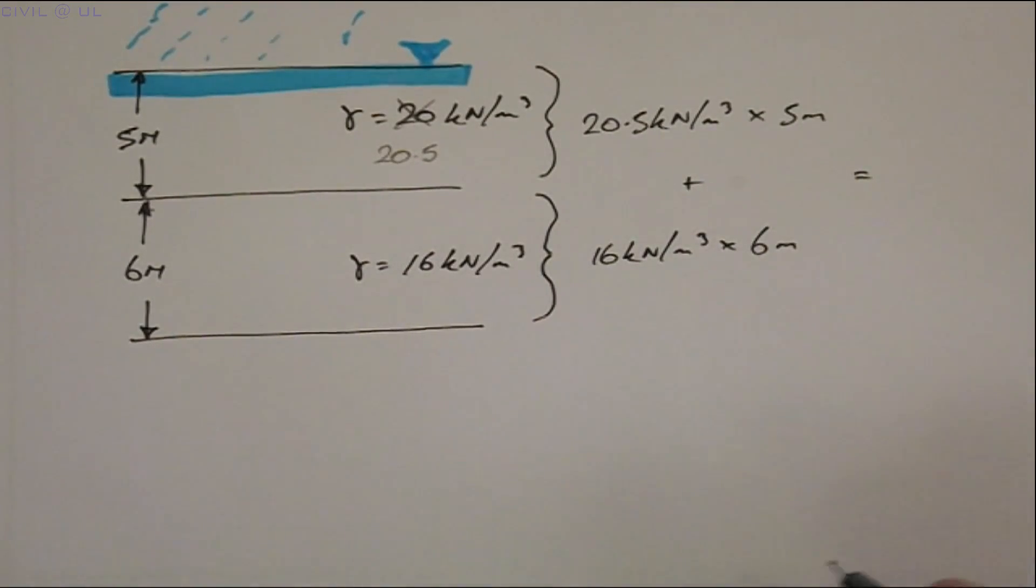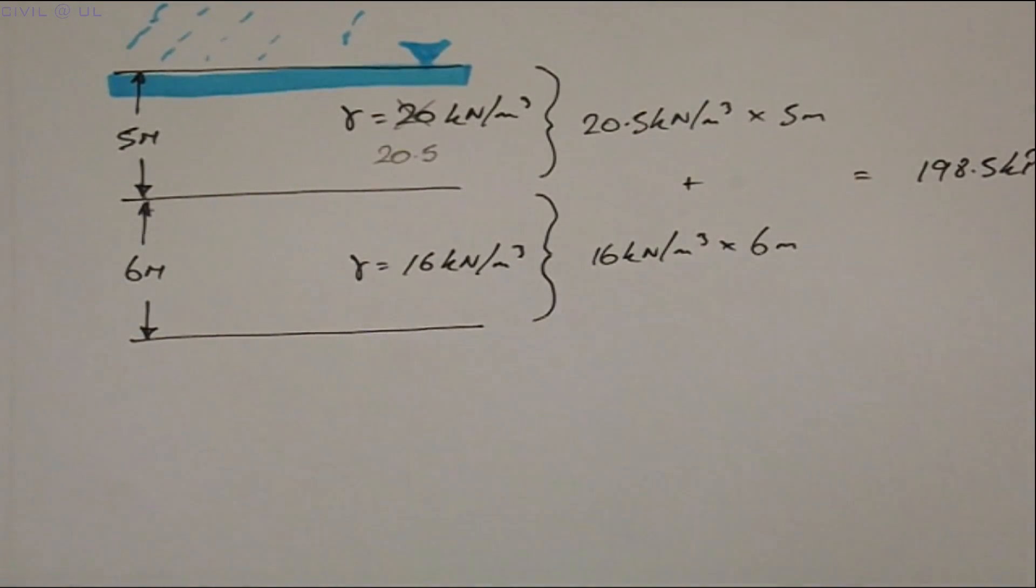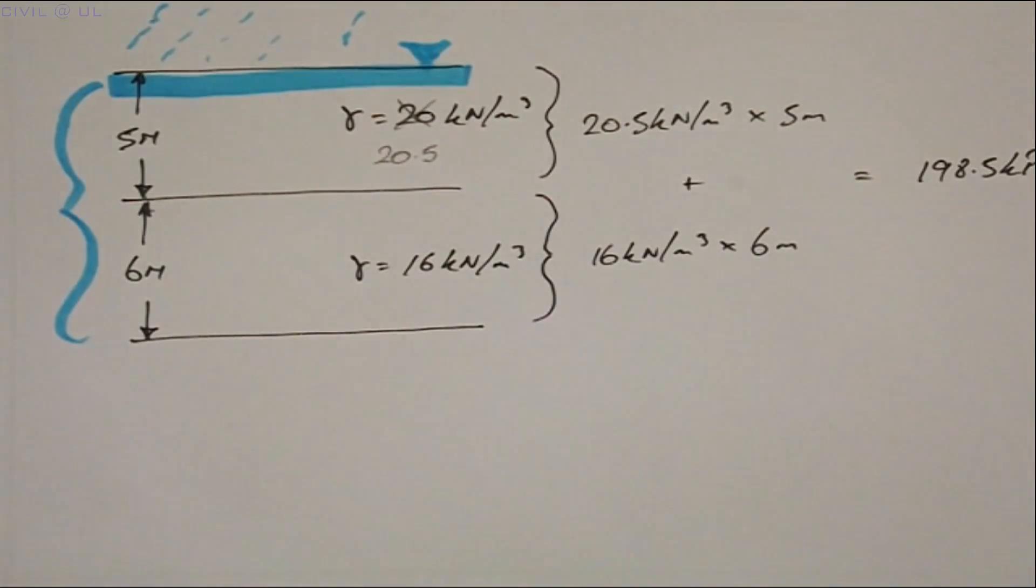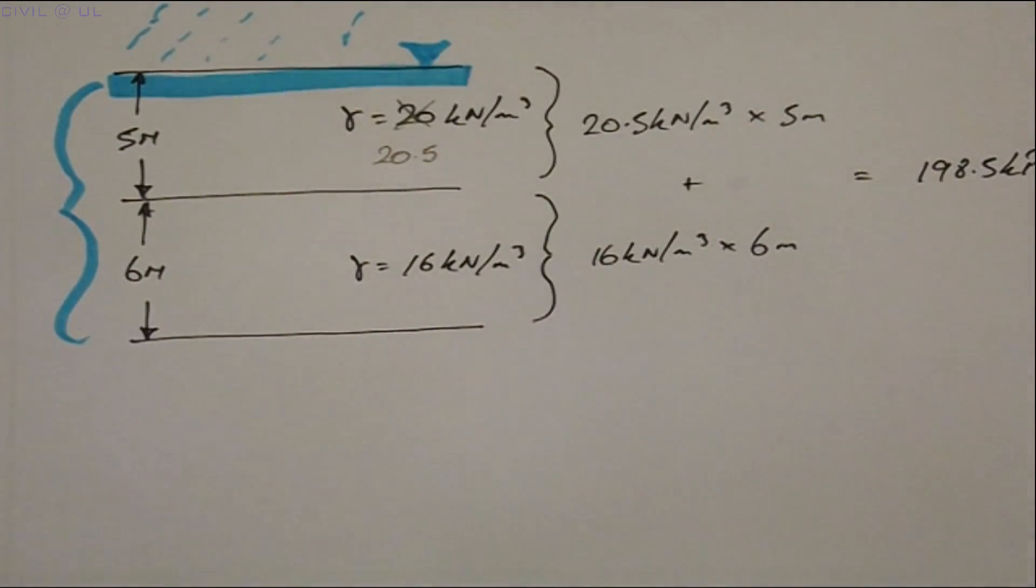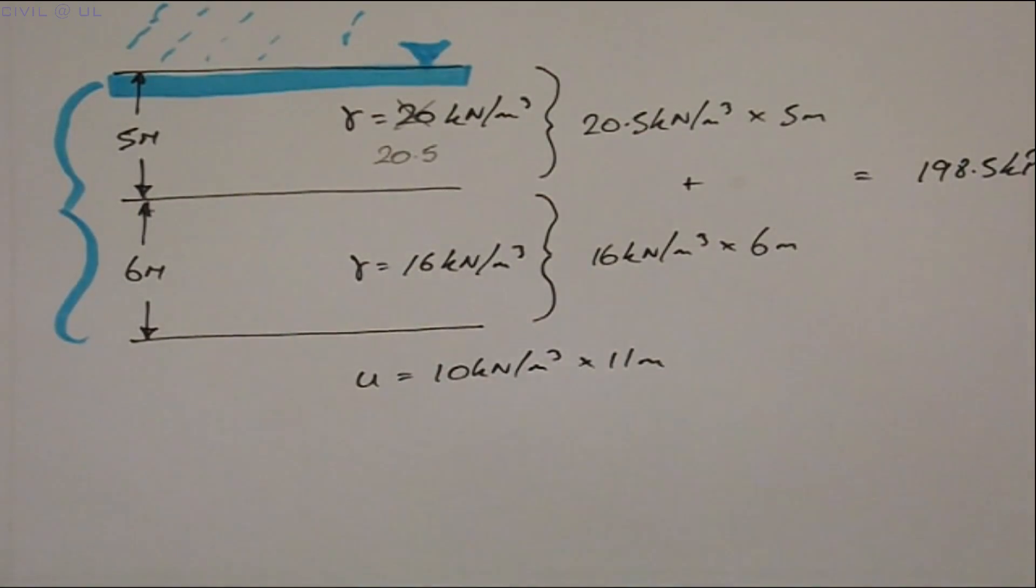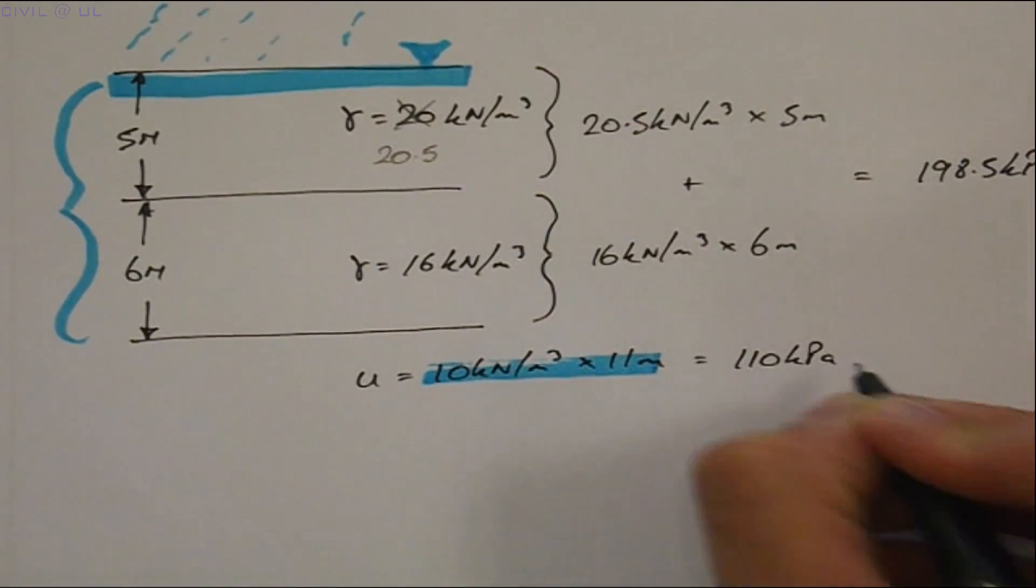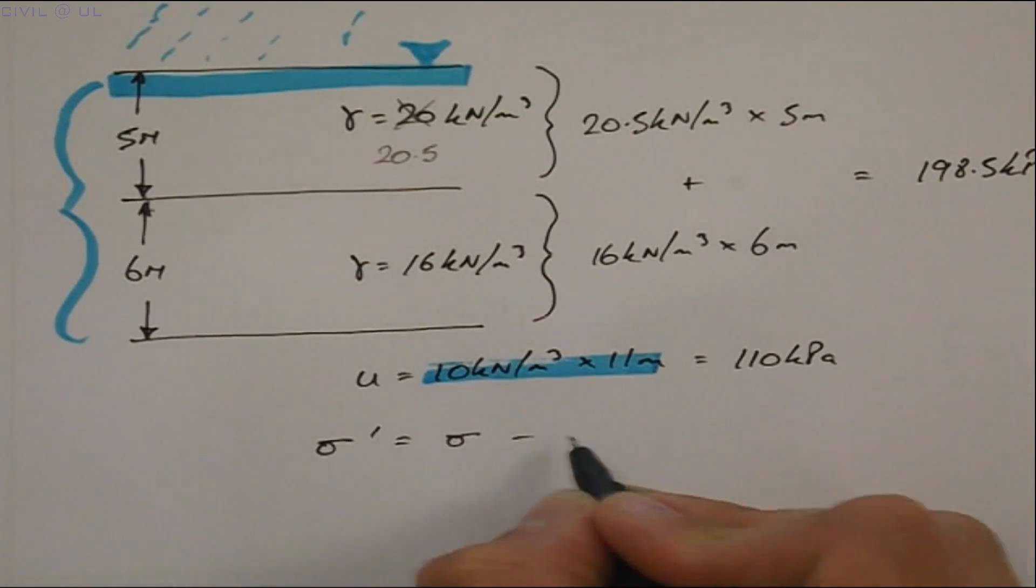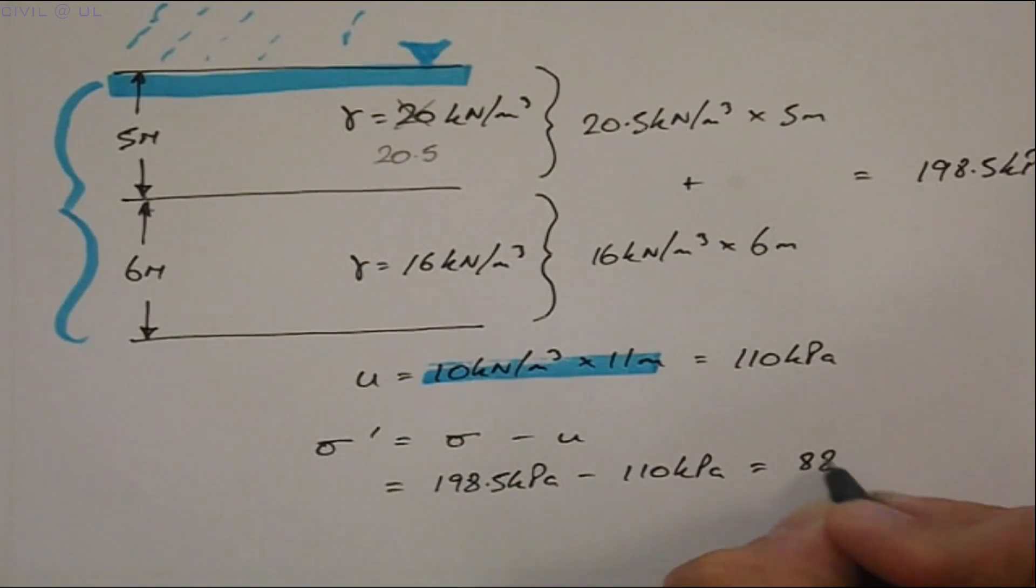Giving a total of 198.5 kPa. And the pore water pressure U is equal to 10 kN per meter cubed multiplied by 11 meters or 110 kPa. Subtracting these gives us an effective stress equal to 88.5 kPa.